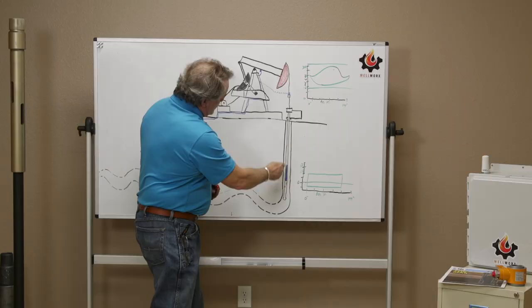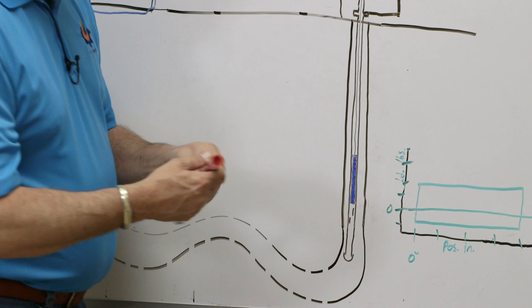and the pumping unit is going to reciprocate up and down. The whole job of that pumping unit is to reciprocate this rod string up and down, and reciprocate the plunger of the pump here.